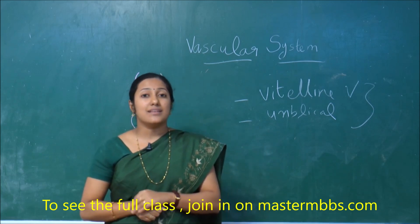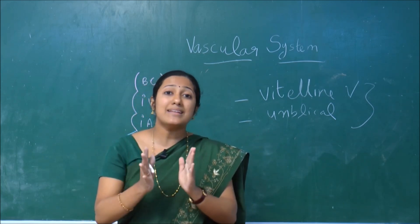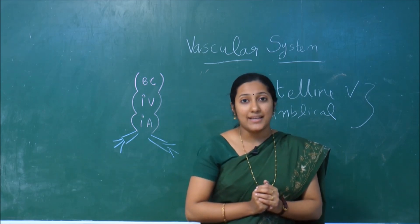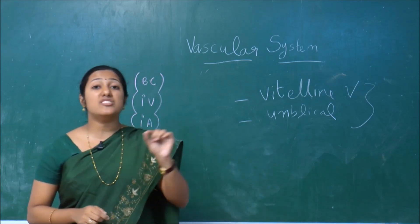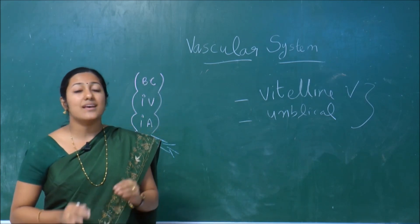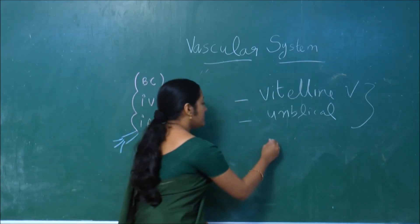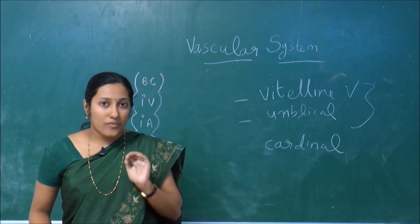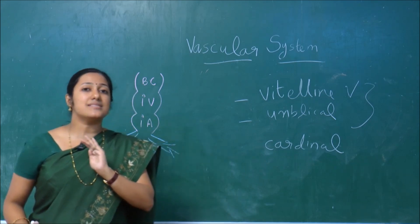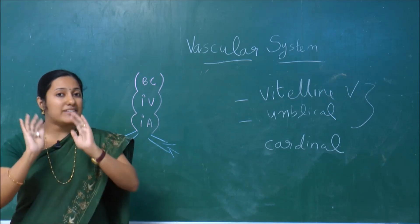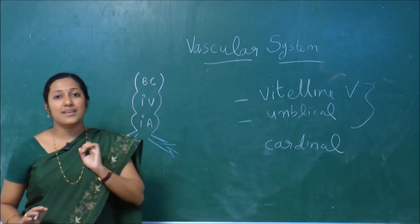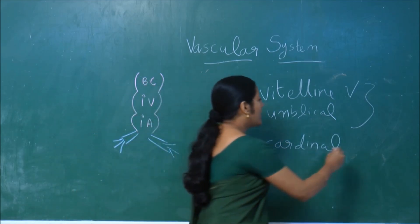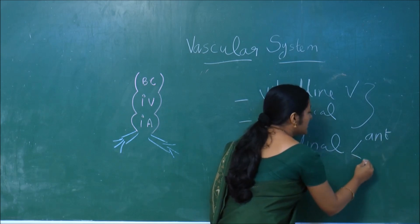The next category is the somatic veins. 'Soma' means body, so the veins which drain the body wall and the structures related to the body constitute the somatic veins. The main veins under somatic veins are known as cardinal veins. So, somatic veins mainly consist of the cardinal veins. The major contribution to visceral veins is by vitelline and umbilical veins, while somatic veins consist of cardinal veins, which are divided into anterior and posterior.